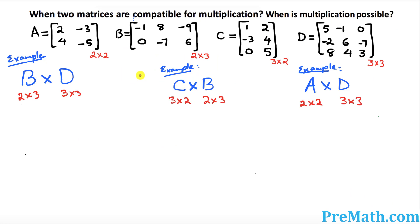Now we're going to look at when any two given matrices are compatible for multiplication — in other words, when it is possible and when it is not. Let's look at the first example: we want to multiply B times D. The dimension of B is 2 by 3 and D is 3 by 3. The rule is that your inside numbers must be the same — here they are both 3, so yes, you can multiply them.